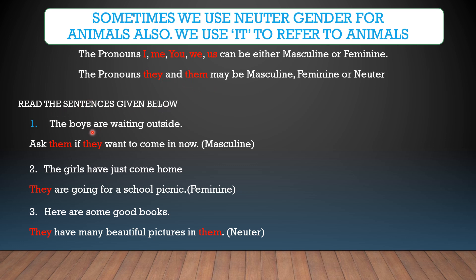Let's read the sentences given here. 'The boys are waiting outside. Ask them if they want to come in now.' Them and they denote boys, so it is masculine gender. 'The girls have just come home. They are going for a school picnic.' They refers to feminine gender because it denotes girls. 'Here are some good books. They have many beautiful pictures in them.' Again, they and them are for neuter gender because they speak for books.